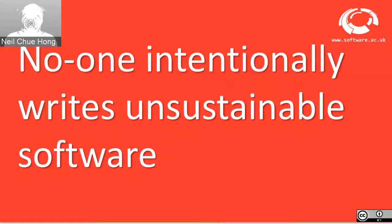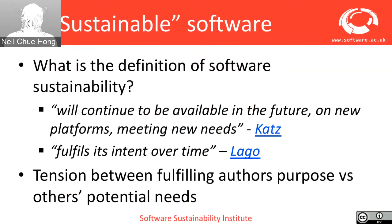No one intentionally writes unsustainable software. We don't start off writing something to be unsustainable. Some people might say we write things with a very short life — a script used only once — but it's not unsustainable in the sense that it has functionality for the time that is necessary. One challenge is understanding what the definition of software sustainability is. Dan Katz has one definition around software being available in the future, available on new platforms, meeting new needs — the idea that it evolves through time to meet current and new needs of researchers.